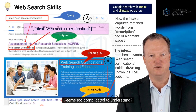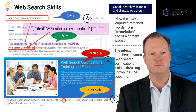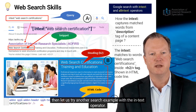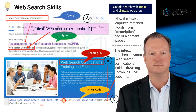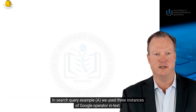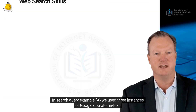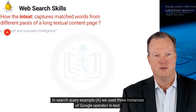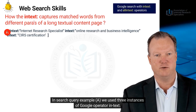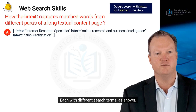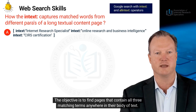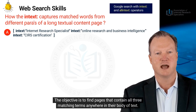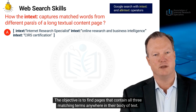Let us try another search example with the in-text operator. In search query example A, we used three instances of the Google operator in-text, each with different search terms, as shown. The objective is to find pages that contain all three matching terms anywhere in their body of text.